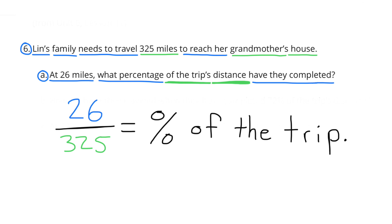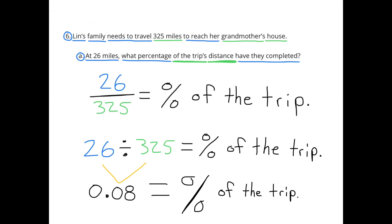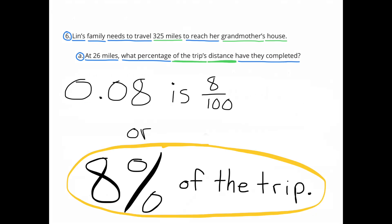Number 6. A family needs to travel 325 miles to reach their grandmother's house. Part A: At 26 miles, what percentage of the trip's distance have they completed? 26 divided by 325 equals 0.08, and 0.08 is 8%. After 26 miles, the family has traveled 8% of the trip.